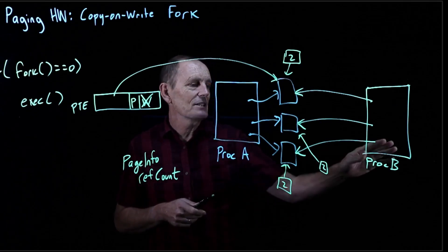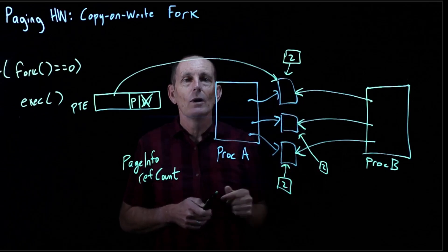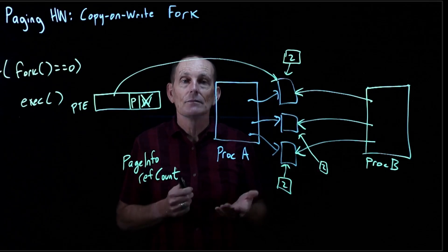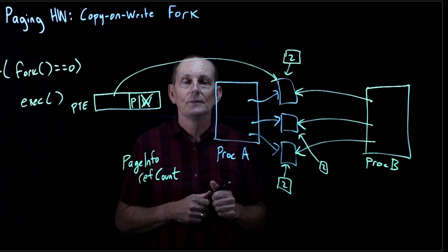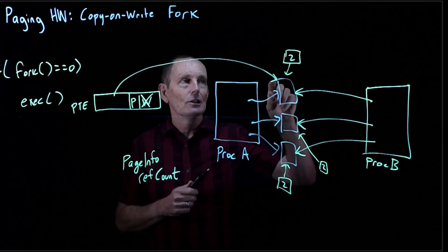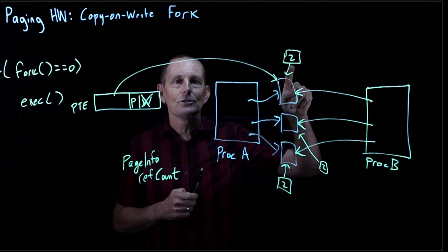And then what happens? Let's say process B tries to change this page. Well, since the PTE doesn't have the write bit set, we're going to get a page fault. The kernel is going to look at this page, look at the reference count for the page and say, hmm, this reference count is 2.